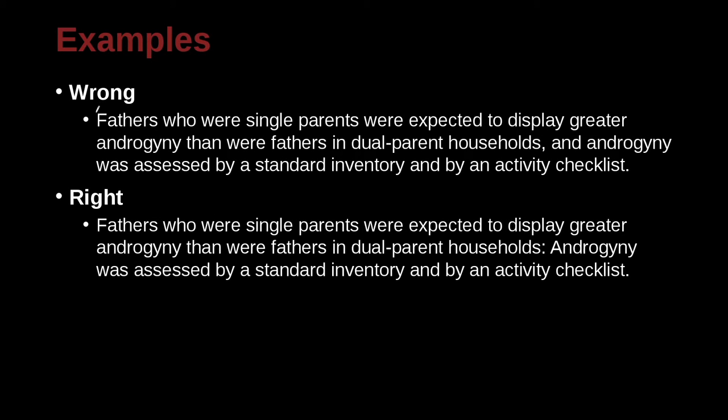Here we have two long sentences joined at a conjunction and a comma. But a better way would be to use a colon with a capital letter, just putting these two sentences together. Fathers who were single parents were expected to display greater androgyny than were fathers in dual parent households. Androgyny was assessed by a standard inventory and by an activity checklist. Clearly these are two separate sentences that don't need to be together. So we would be best to just have them separated. But we can bring them together with a colon, a space, and a capital. The idea being these two ideas are highly related, so we want them together.